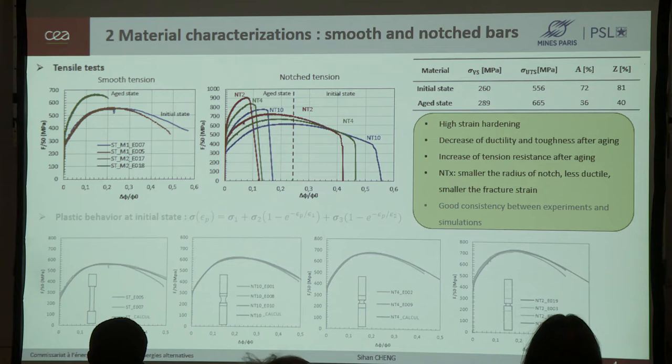If we look at the result of notched tensile test, when the notch radius decrease, we have an increase of maximum stress and decrease of fracture strain. And once again, we found the decrease of ductility after aging. All these tensile results form a database for the identification of plastic behavior of our material.